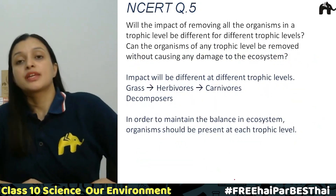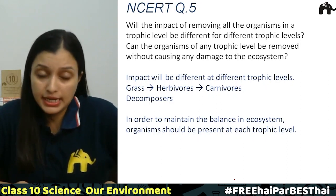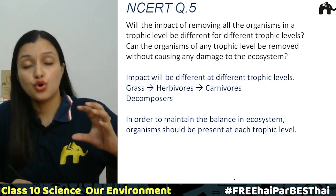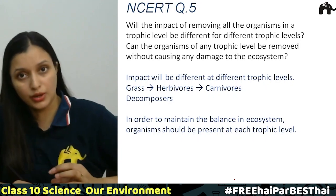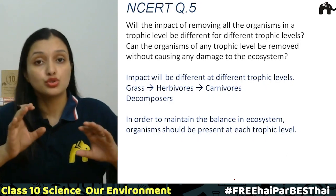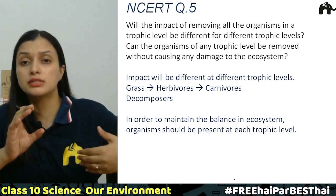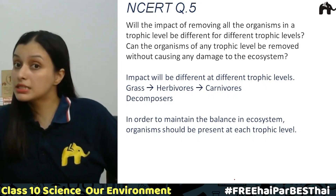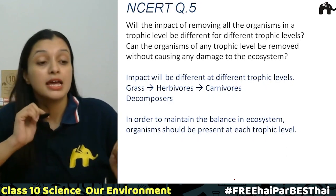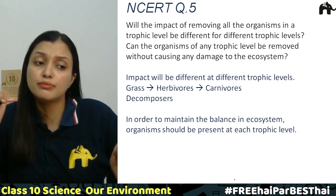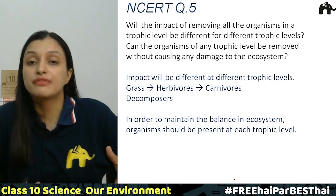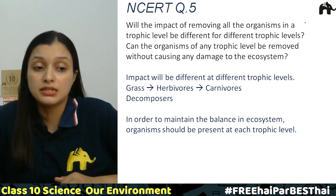Question number five: will the impact of removing all organisms in a trophic level be different for different trophic levels? इसका answer है yes। अगर second trophic level से organism हटाए तो first trophic level में unchecked और uncontrolled growth हो जाएगी, और third trophic level में organisms मरना शुरू हो जाएंगे क्योंकि उनका खाना बंद हो जाएगा। Can any organism be removed without causing damage to the ecosystem? — इसका answer है no।